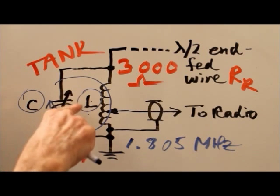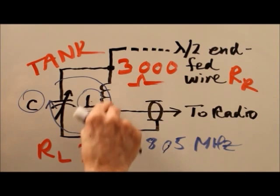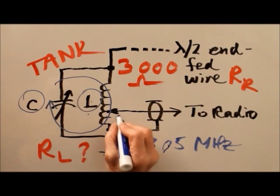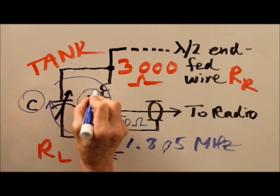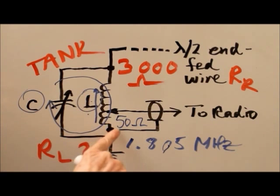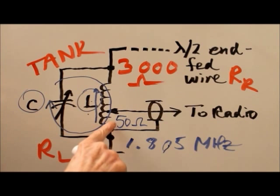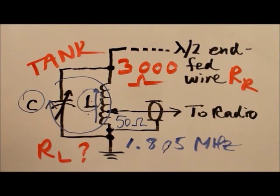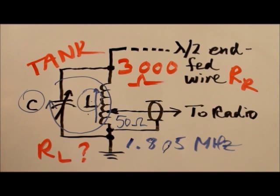But how do you get your radio to match to that? Well, once you've got this thing tuned to resonance at 1.805 megahertz, then you just adjust that roller to get the tap so that you get a 50 ohm point on that tap. See, as you move this tap up the coil, you'll always get a purely resistive impedance at the tap. But that pure resistance will increase from zero down here at the bottom to the maximum, in this case, 3000 ohms up at the top.